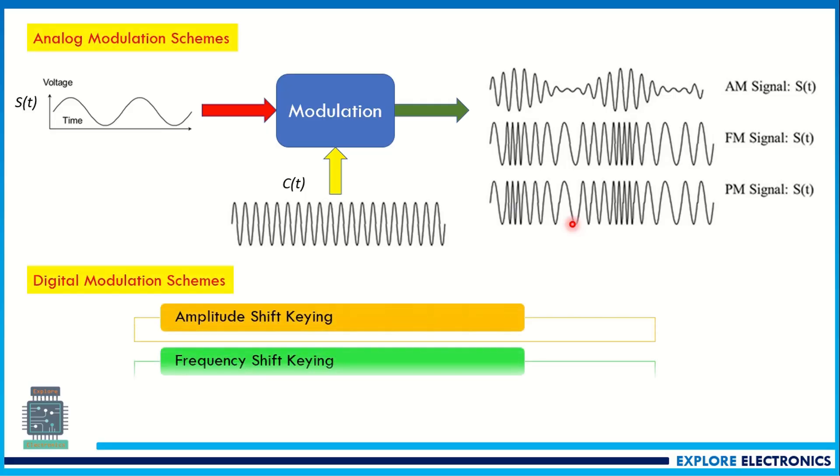Like this you can explain any single modulation scheme like amplitude modulation, or you can also explain amplitude shift keying, frequency shift keying, or phase shift keying. This carries eight marks.